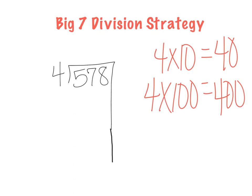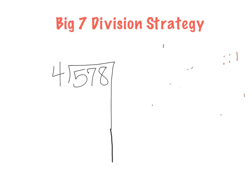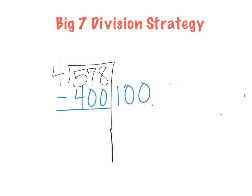So I want to pull out a huge chunk — the 400. Since I'm pulling out a big chunk of 100, I'm going to think 4 times 100 was 400, and put it right there under my dividend. Then I'm going to subtract, because since I'm taking out that big chunk, I need to subtract it. Starting in the 1s place: 8 minus 0 is 8, 7 minus 0 is 7, and 5 minus 4 is 1. So now my new dividend is 178.